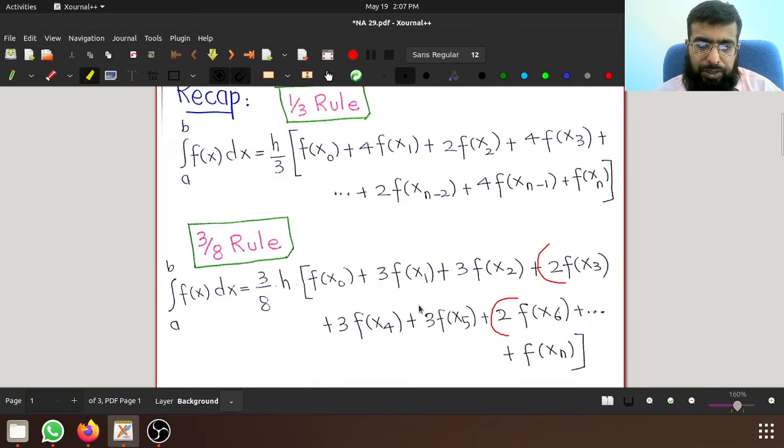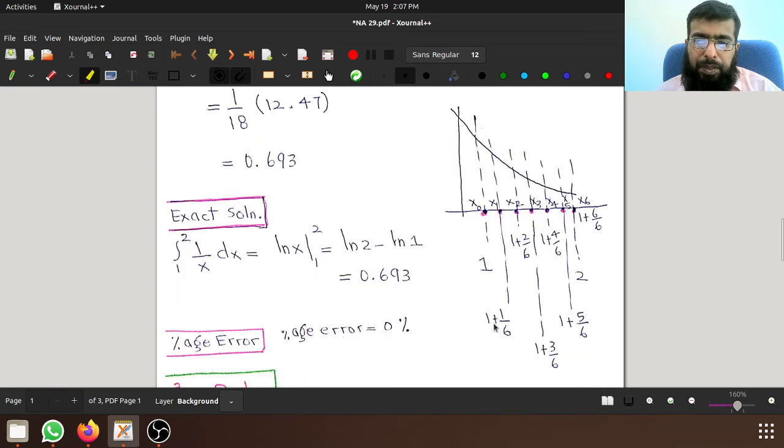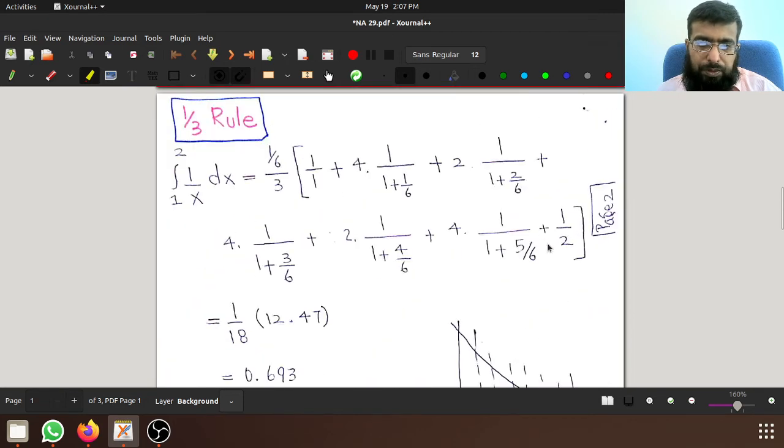x naught is the first value a, x1 is the base value 1 plus h, 1 plus 1 over 6. The second value is 1 plus 2 over 6. The third value is 1 plus 3 over 6, then 1 plus 4 over 6, and 1 plus 5 over 6. The final value is 1 plus 6 over 6, which is equal to 2. So we plug these values in here.